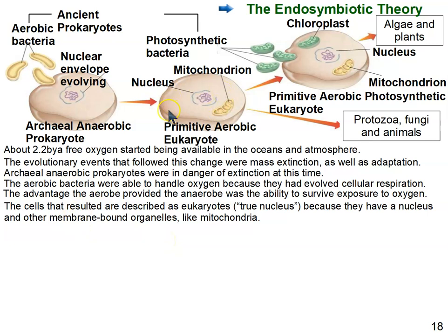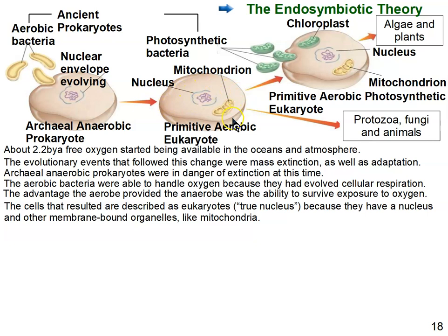This combined organism would be considered a eukaryote. Infolding of the plasma membrane is thought to create a membrane around the DNA in the cell, which is represented by what's labeled the nucleus. Other organelles would also be created by the infolding of the plasma membrane, which we see creating structures in prokaryotic cells today.